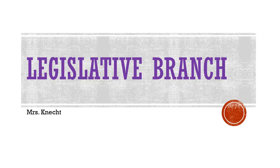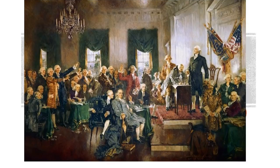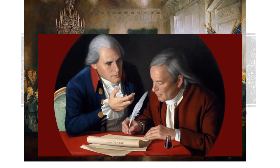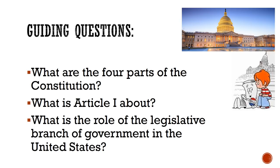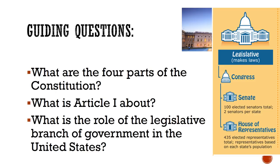Today's homework video will cover the legislative branch of government. I chose this one first because it is the branch of government explained first in our Constitution. When the framers were coming up with the branches of government during the Constitutional Convention, the legislative branch needed the most compromise so that each state could resolve their differences. The video will answer the following guiding questions: What are the four parts of the Constitution? What is Article 1 about? And what is the role of the legislative branch of government in the United States?